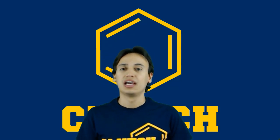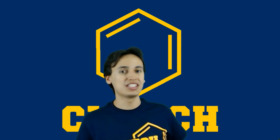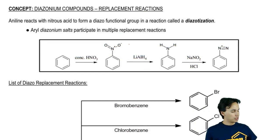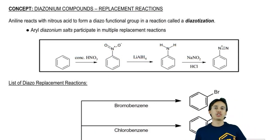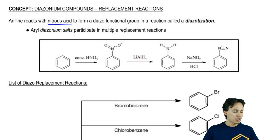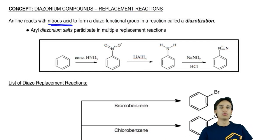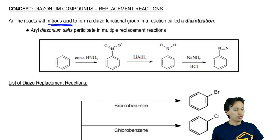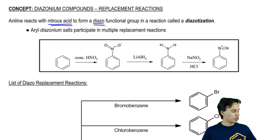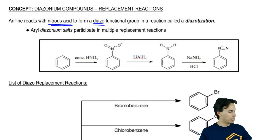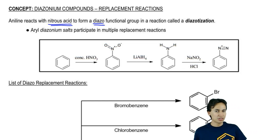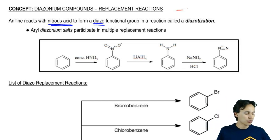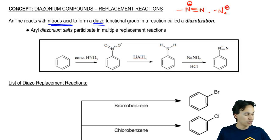I want to switch gears and talk about a type of reaction that happens on benzene called a diazonium replacement reaction. Aniline — an NH2 on a benzene — when it reacts with nitrous acid, NO2 over HCl, you can form a diazo functional group in a reaction called diazotization. A diazo group is an N triple bond N group with a positive charge, also called an N2+ group.